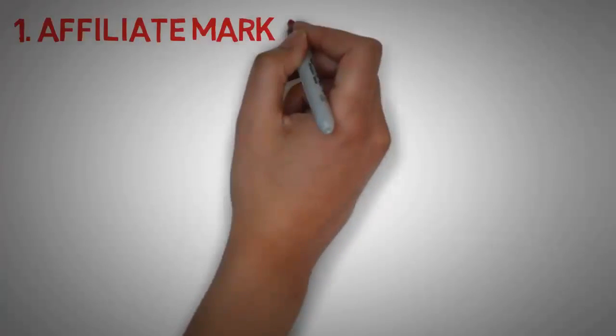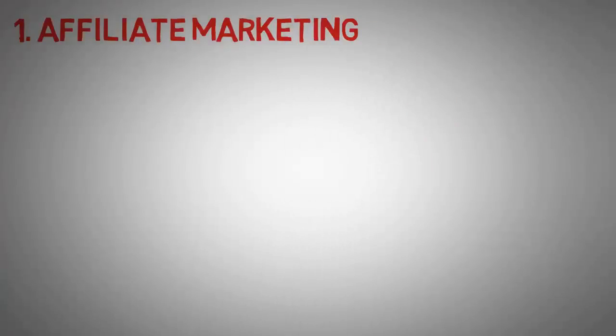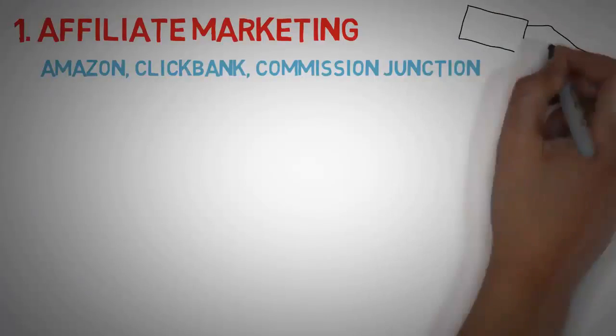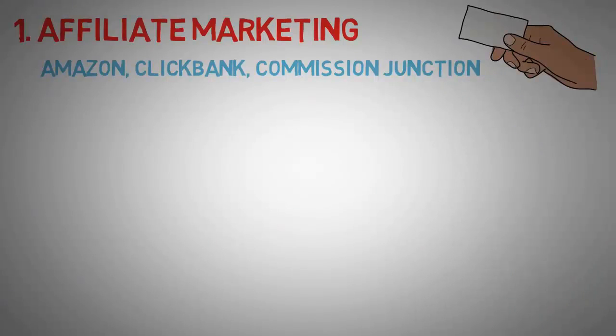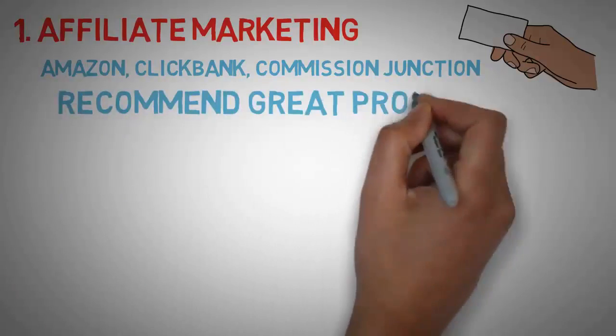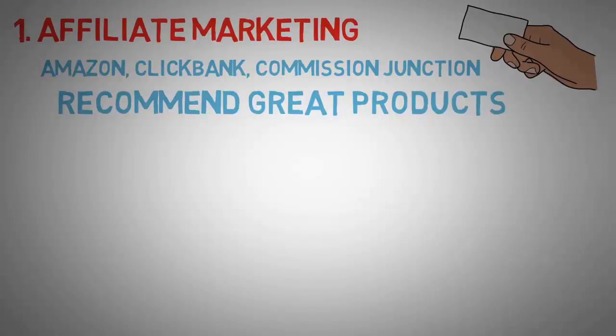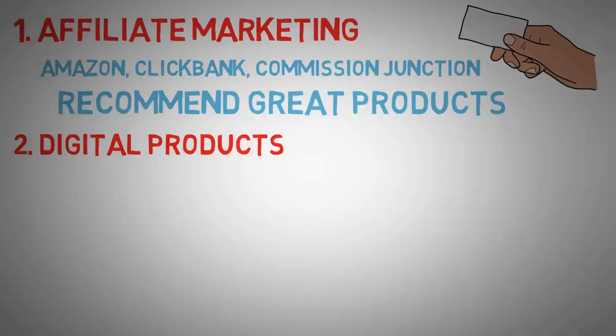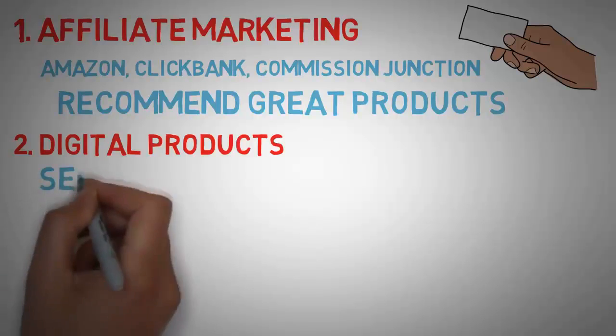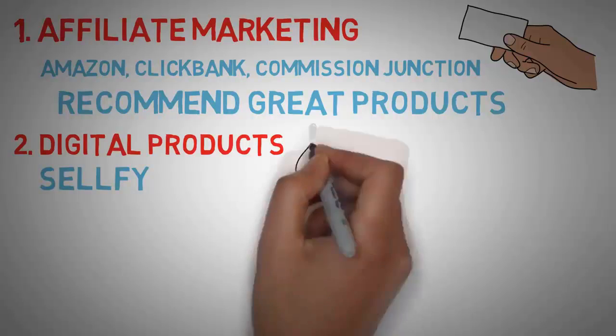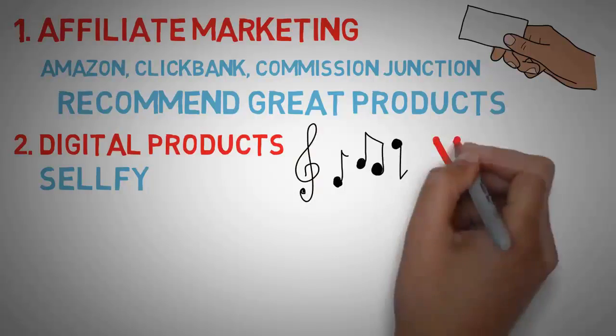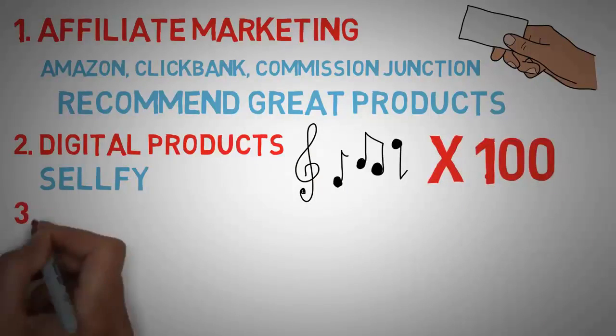So the first one is affiliate marketing. Now this would be like Amazon, Clickbank, Commission Junction. There's a whole bunch of them out there. Basically you send someone somewhere else to pay for something and you get a commission of that from 3% to 7%. I've seen all the way up to 80%. It's pretty easy. You just have to recommend great products that will sell themselves. That's the trick. Number two is digital products. So I experimented a little bit with this on Sellfy. You can actually make money by selling high quality backgrounds, templates, songs. Some people are actually willing to pay $20 to get my background music. Isn't that pretty awesome? If I could do that a hundred times, there's two grand right there.